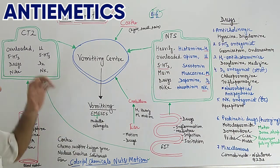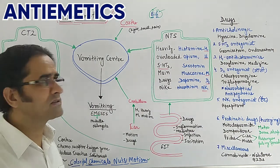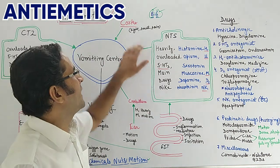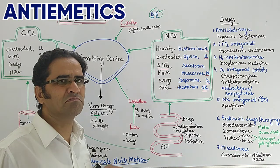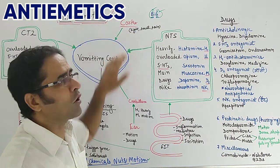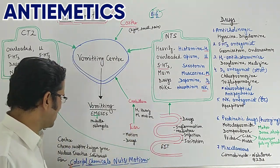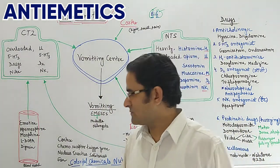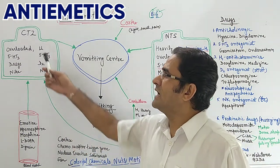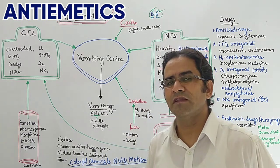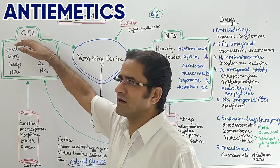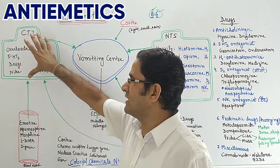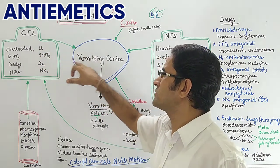Now we will see one by one how these four relay centers are stimulated and vomiting results. The cortex is involved whenever a person feels nauseated or vomits by seeing a particular sight, a peculiar smell, or because of certain pain — that is why we named it 'colorful.' Next, chemicals means drugs and drug-like substances which, when they enter the body, interact with the CTZ — the chemoreceptor trigger zone located in the brain. Once these chemicals interact with receptors in the CTZ, they send impulses to the vomiting center and vomiting occurs.